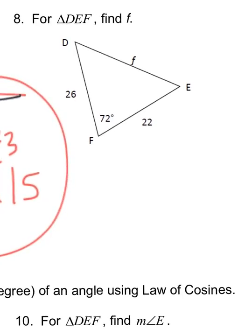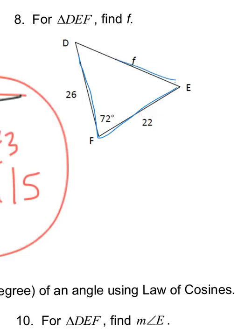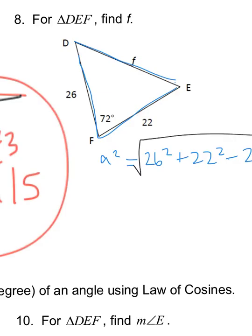For the next problem, use law of cosines again — it's a side-angle-side situation and you want the side opposite the angle. So it's F squared equals 26 squared plus 22 squared minus 2 times 26 times 22 cosine of 72. You get F squared, so take the square root of both sides and put it carefully in your calculator, rounding to the nearest tenth. F is approximately equal to 28.4.